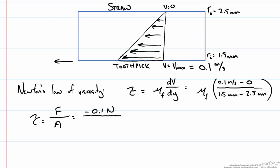Now our area in this case is going to be the surface area of our toothpick. So that is going to be pi times the diameter. In this case our diameter is 3 mm or 0.003 m times our length. We said it was 50 mm of our toothpick being pulled out so that is 0.050 m.